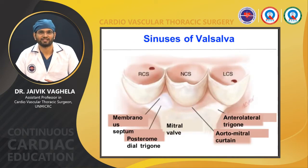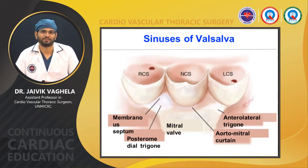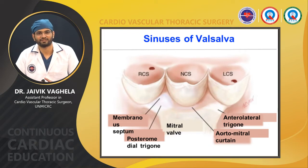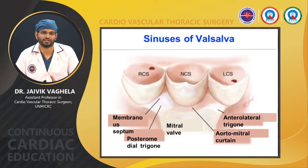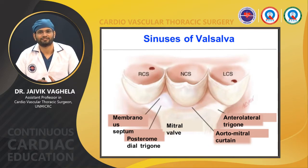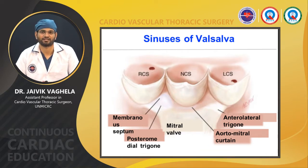The sinus of Valsalva is comprised of three cusps: the non-coronary cusp, right coronary cusp, and left coronary cusp. The non-coronary cusp does not give rise to any coronary ostial opening, while the right coronary cusp gives rise to the right coronary artery, and the left coronary cusp gives rise to the left main coronary artery, which further divides into the left anterior descending and left circumflex artery.